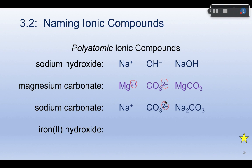Last example: a polyatomic ion with a transition element. Iron 2 hydroxide — iron 2 means plus 2, and hydroxide is a minus 1 ion. It takes two hydroxides to balance a plus 2, and you use parentheses to show the polyatomic ion occurs twice: Fe(OH)2, iron(II) hydroxide. I hope this helps as you prepare for your homework and upcoming test. It gets much better with practice — good luck, and see you in class.